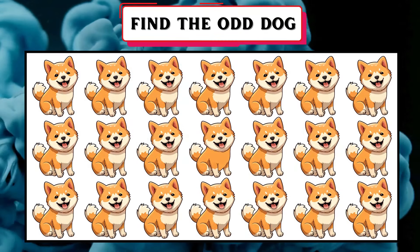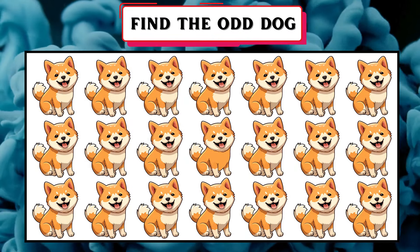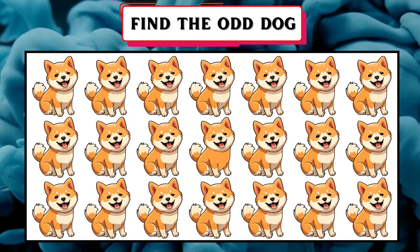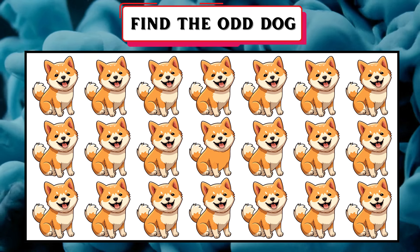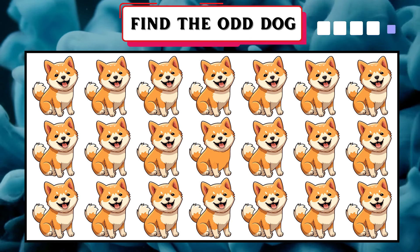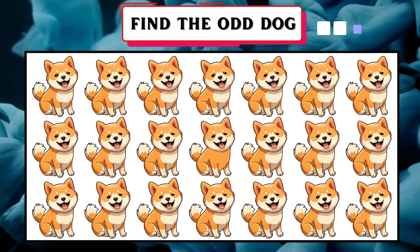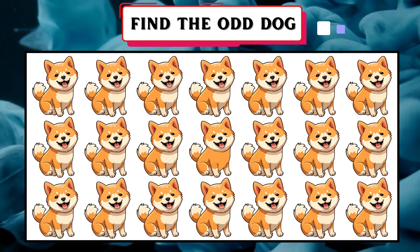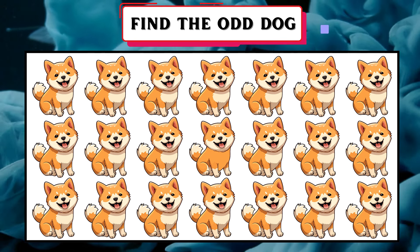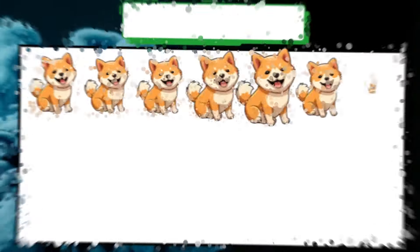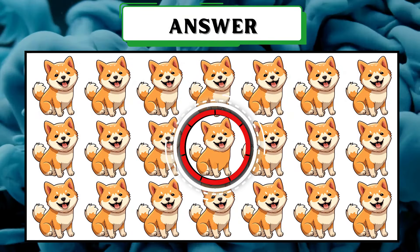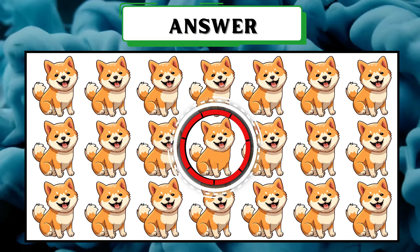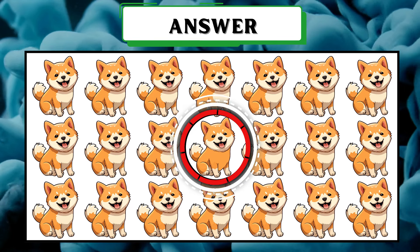Examine the picture and observe the details of each dog. Try to find the odd dog. Your answer is so accurate. The odd dog is in the fourth place in the second row.